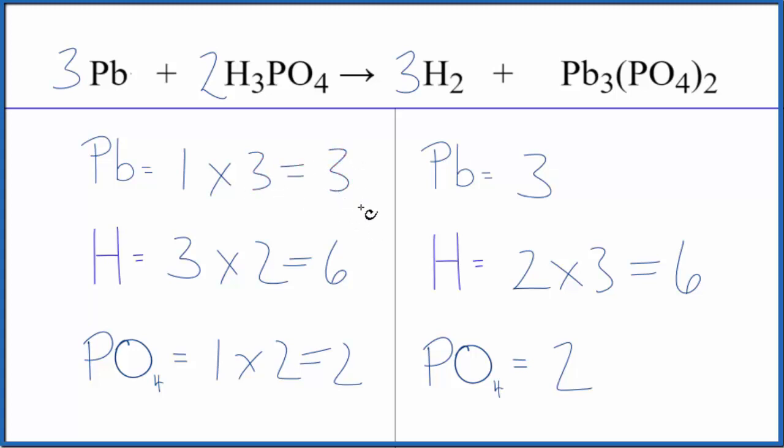So in this equation, this is a single displacement reaction. In single and double displacement reactions, if you have a polyatomic ion that's the same on both sides, just count it as one thing. Either way you get the same answer, this is just a lot faster, and that's kind of important when you're taking an exam.